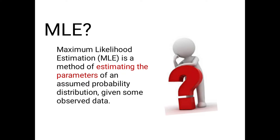What is the maximum likelihood estimation method? Maximum likelihood estimation is a method which determines the values of a parameter of a model in such a way that the obtained parameter values maximize the likelihood that the process described by the model produced the data that were actually observed. Parameter values determine the location and shape of the curve on the plot of distribution, and each combination of parameter values produces a unique distribution curve.